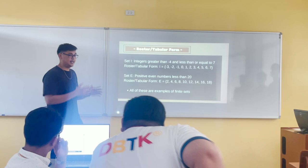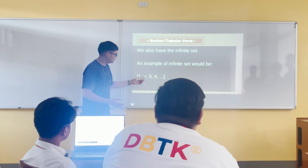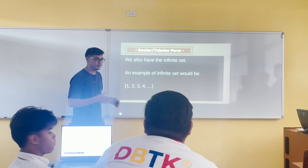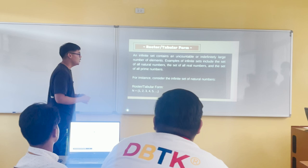These are examples of finite sets. We also have infinite sets. An example of an infinite set will be {1, 2, 3, 4, ...} — we put a comma and then an ellipsis. This means that the set is non-ending or never-ending. An infinite set contains an uncountably or indefinitely large number of elements.